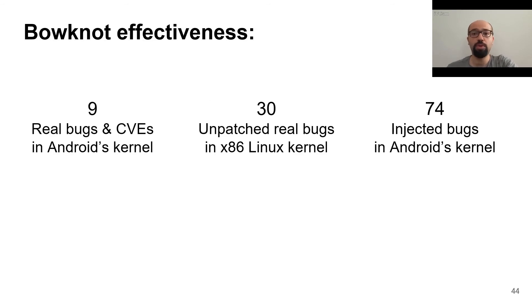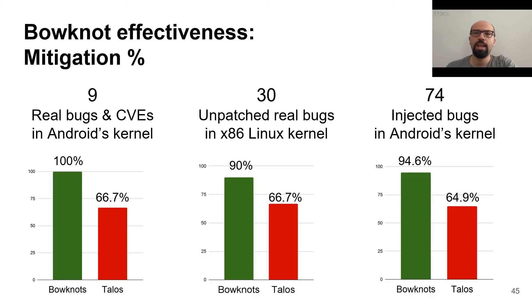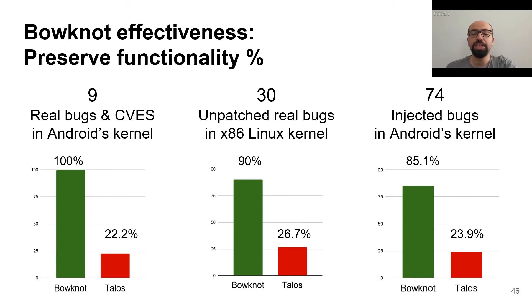Now let's see the effectiveness of our solution. We tested the effectiveness of bonots on 113 bugs in three different experiments: nine real bugs and CVEs of the Android kernel, 30 bugs in the Linux kernel that were unpatched at the time of our experiments, and 74 bugs injected into the Android kernel. We can see that bonots can mitigate the vulnerabilities in almost all these cases and outperform Talos in all experiments. In addition, as opposed to code disabling, bonots do a good job in preserving system functionality after bug mitigation.